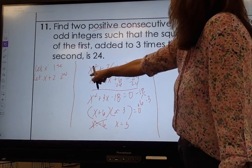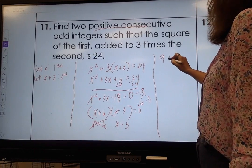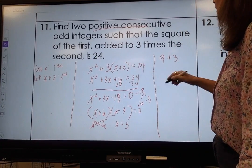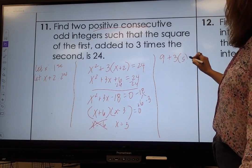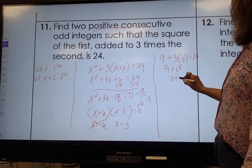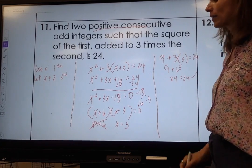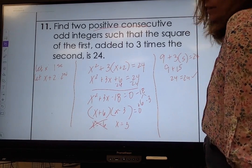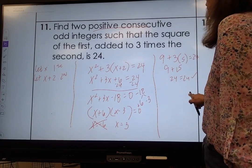Does 3 squared, which is 9, plus 3 times the second integer, which is 5, does that equal 24? 9 plus 15 equals 24. 24 equals 24. It checks out. So the number that I am looking for is 3 and 5.